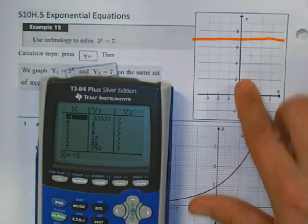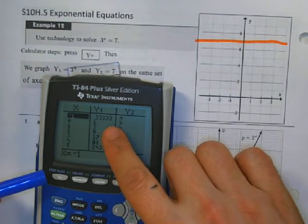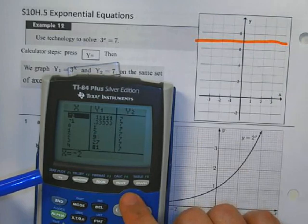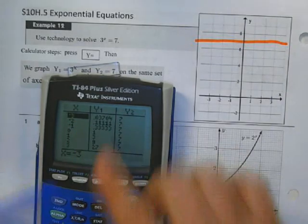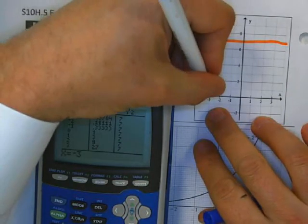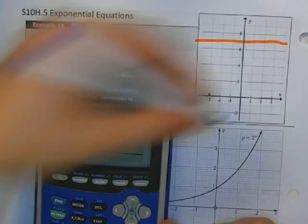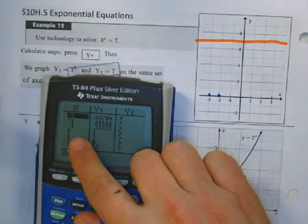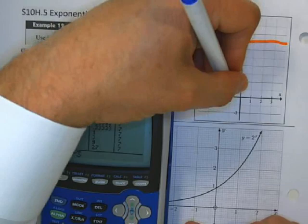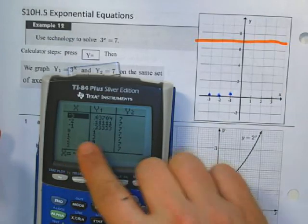Now, the more interesting graph is the exponential. So when x is negative 3, we're at 0.3. When x is at negative 2, we're at 0.1. When x is at negative 1, we're at 0.3. When x is at 0, we're at 1.